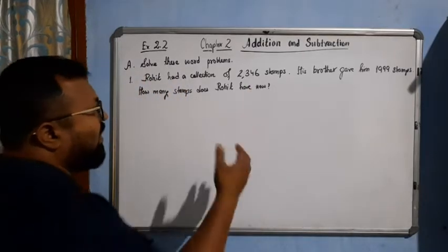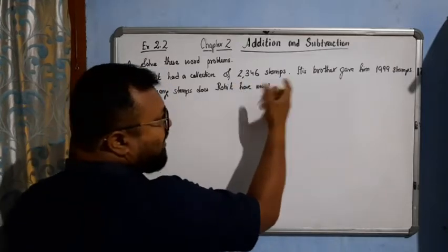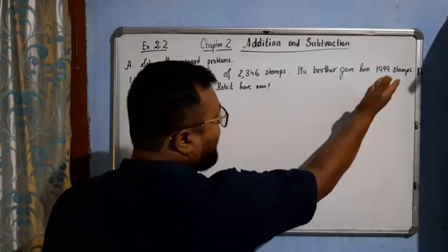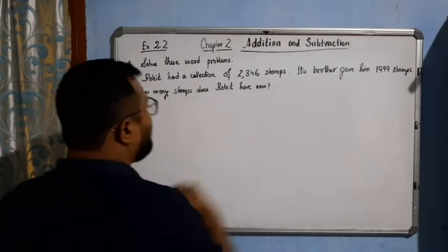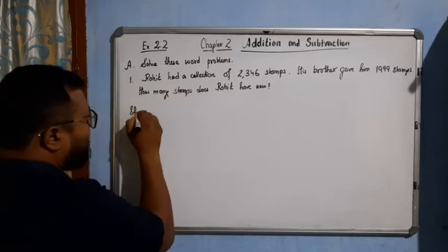It's very simple. Earlier he was having 2346 stamps in his hand and his brother also gave him another 10999 stamps. So, ultimately how much will he have? He will have the sum of these two numbers, very simple. So, we will write like this here.